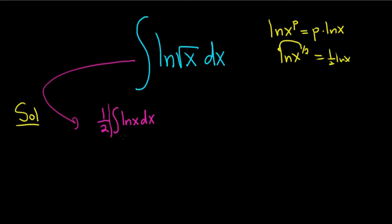All right, so now we just have to integrate the natural log of x and multiply the answer by 1 half. So let's go ahead and use integration by parts on this. We'll let u be the natural log of x and dv will be equal to dx. And then so du is 1 over x dx. And when we integrate v, we just get x.